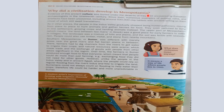Why did civilization develop in Mesopotamia? Evidence of this ancient culture was buried under the deserts of Iraq until uncovered by European archaeologists in the 19th century. Since then, numerous examples of pottery, ruins, and artifacts have been uncovered, including around 500,000 clay tablets with ancient writings on them — most of which still await translation.